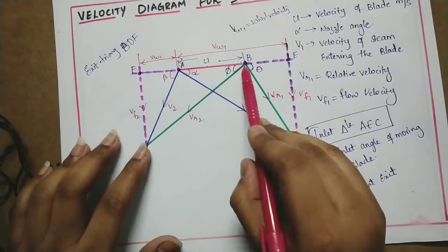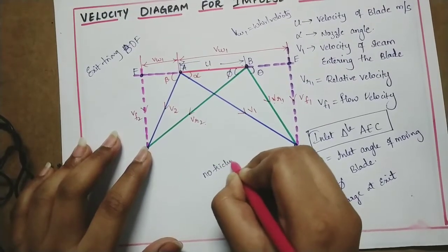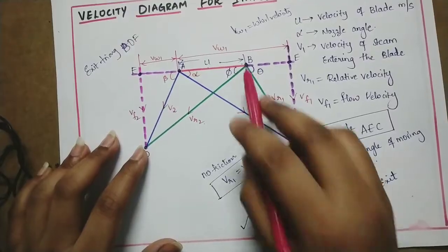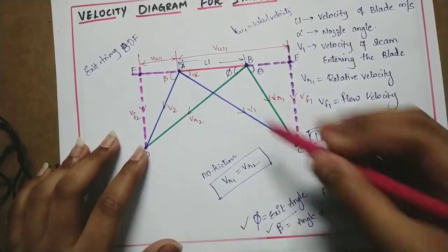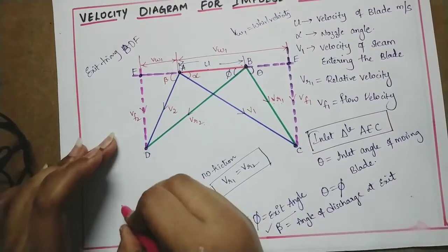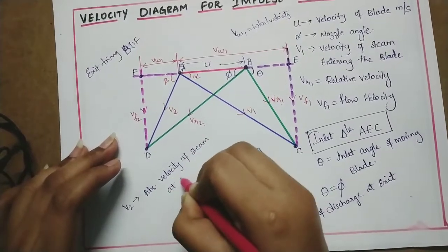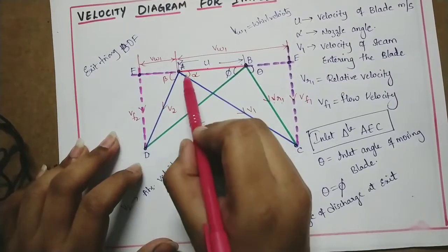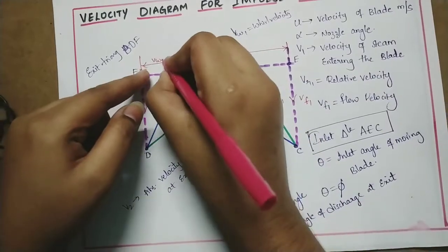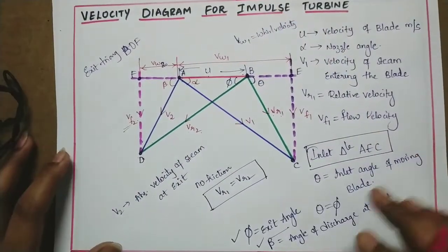Then beta is the angle of discharge at exit. At angle phi, we draw relative velocity VR2. If there is no friction, VR1 equals VR2. For impulse turbine with no friction, VR1 will equal VR2. Draw the same length at phi angle, the exit angle, to get VR2.